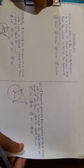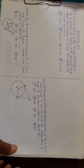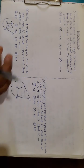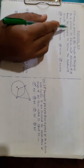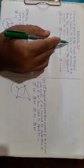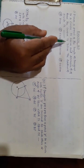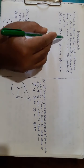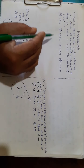Now let us solve exercise 4.2, first problem. From a point Q, the length of the tangent to a circle is 24 centimeters, and the distance of Q from the center is 25 centimeters. Find the radius of the circle.